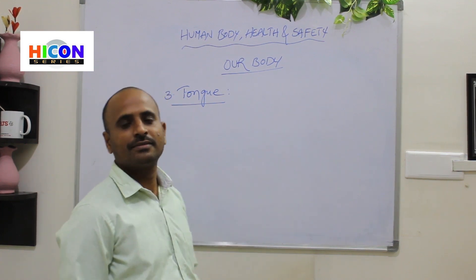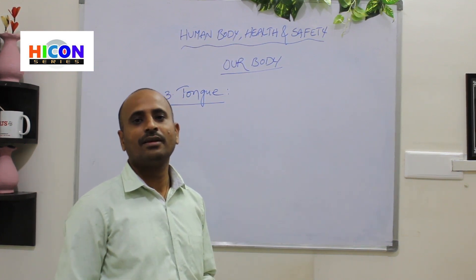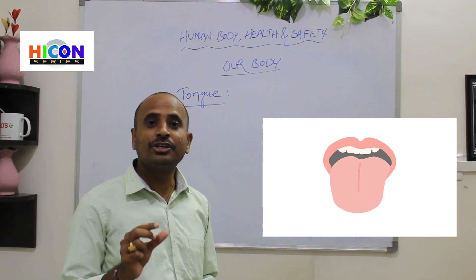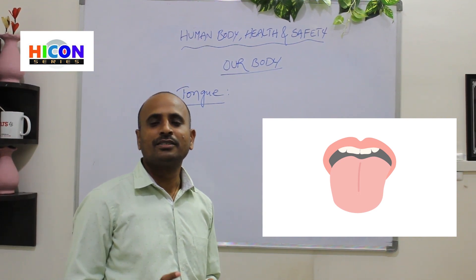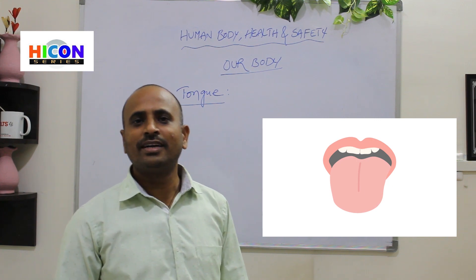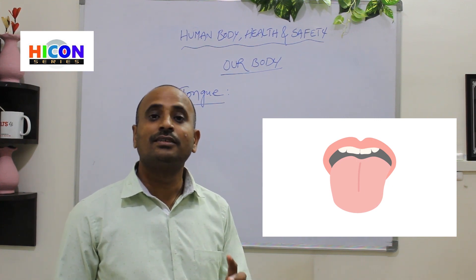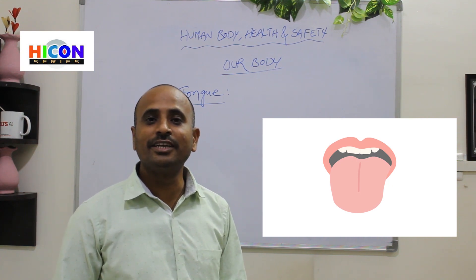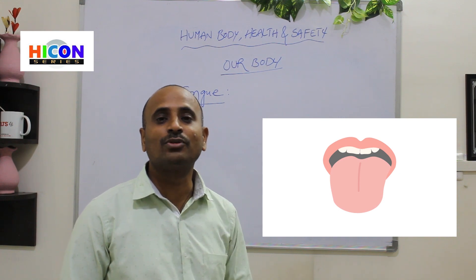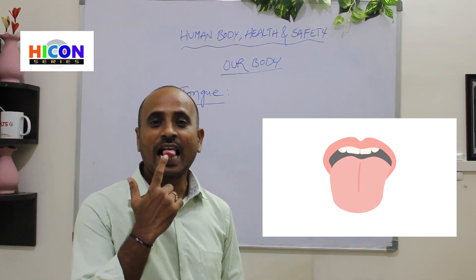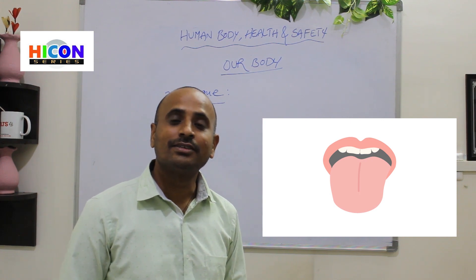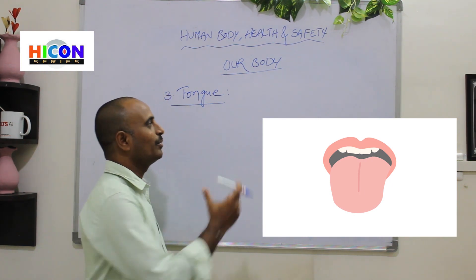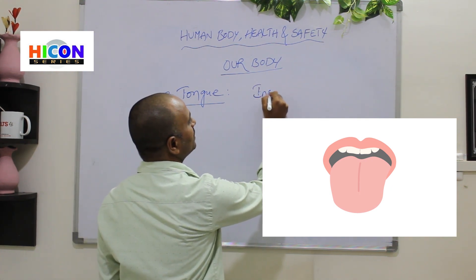The next part is tongue. What is the function of tongue? Let's see the picture — the picture has a tongue. Where is the tongue located? The tongue is present inside our mouth. What is the function of our tongue? We can eat different types of foods with our mouth. Mouth is used to eat food. All living beings eat food because they get energy from it. If they do not take food, they cannot survive.